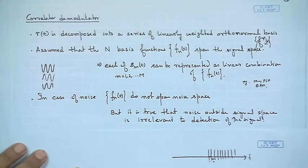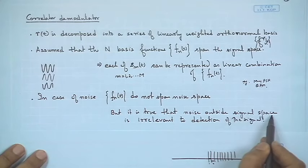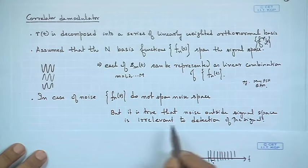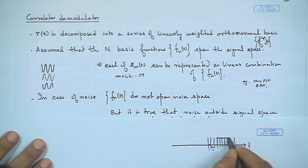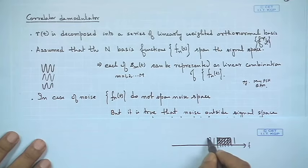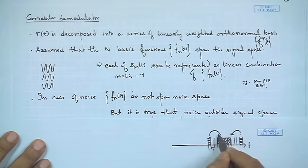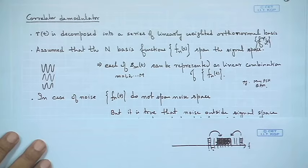If my signal is present in a band of frequencies, the noise present in other frequency bands will not influence the detection of the signal. This applies whether you think in terms of frequency bands or in terms of the abstract basis function representation — one is a particular realization of the other. This is something important to remember.